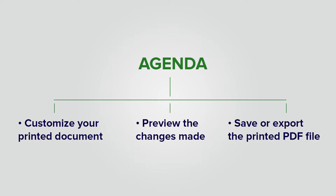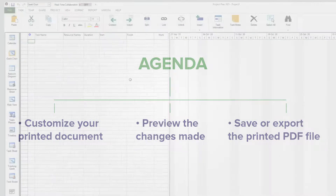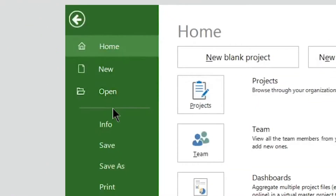Hi, I'm Victor from Project Plan 365 and in this video I'm going to present to you how to print on a Windows device using the Project Plan 365 app. Today we will discuss how to customize your printed document, preview the changes made, and save or export the printed PDF file. Let's open our sample file.